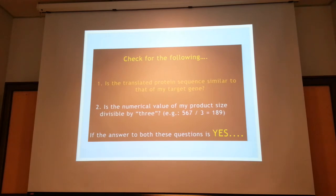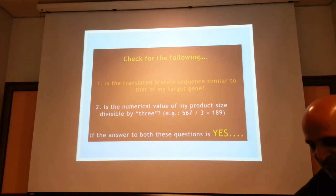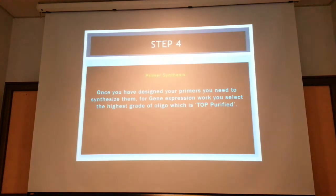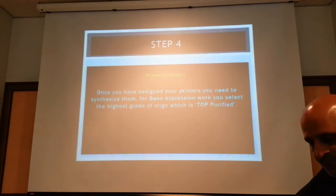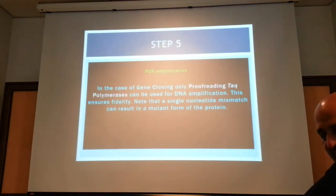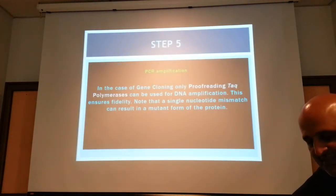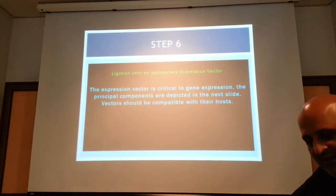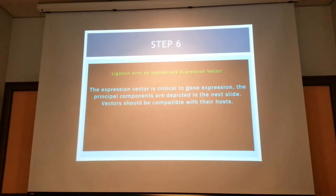This is the rule of three — you divide your sequence to check it, otherwise you will order a gene encoding a protein which is not the one you need. Then you proceed to primer synthesis or gene synthesis and amplify the gene of interest. You then ligate onto the appropriate expression vector — this is where matching of the vector and the host comes into play.